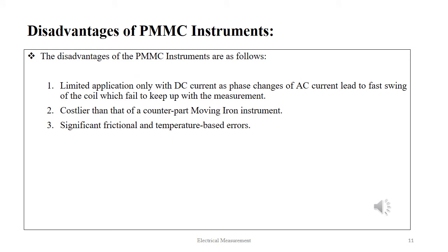The disadvantages of PMMC instruments are as follows: limited application only with DC current, as phase changes of AC current lead to fast swing of the coil which fails to keep up with the measurement; costlier than the counterpart moving iron instrument; and significant frictional and temperature-based errors are present.